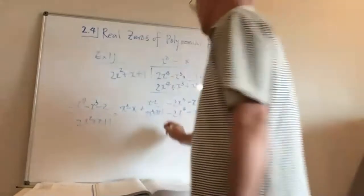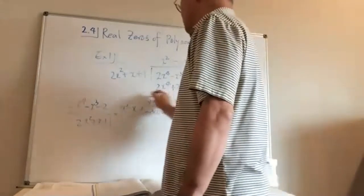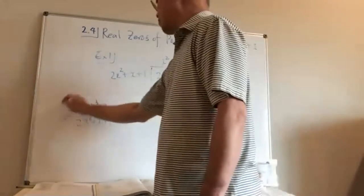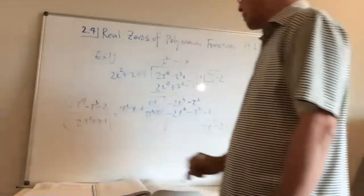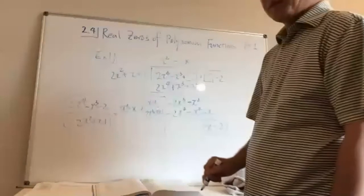So 2x⁴ - x³ - 2 divided by 2x² + x + 1 gives a quotient of x² - x with a remainder of x - 2.